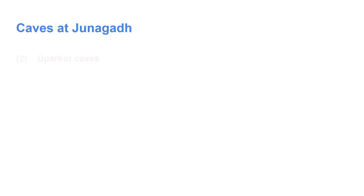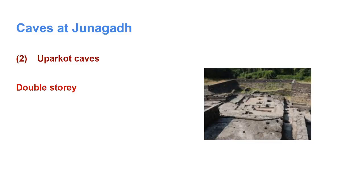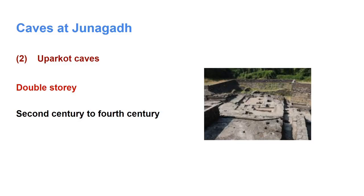The next one is Upparkot caves. They are double-storied, and on seeing their remains one can say that they might have been carved during the end of the second century and the beginning of the fourth century. The next one is Khabrakeria caves, located at Upparkot beyond a 300-feet big motte, close to Adikadi Vav. These caves have the influence of Sathvahana architecture. Sathvahana was the first dynasty.